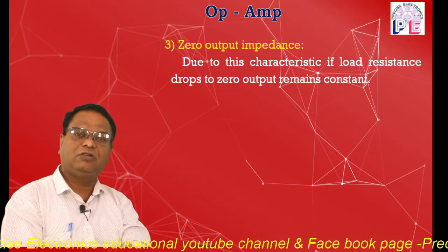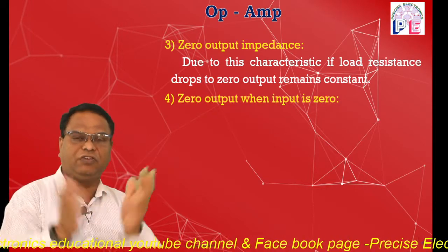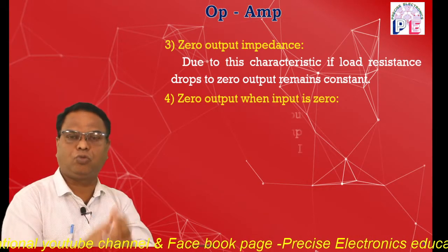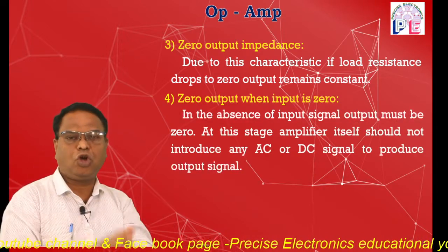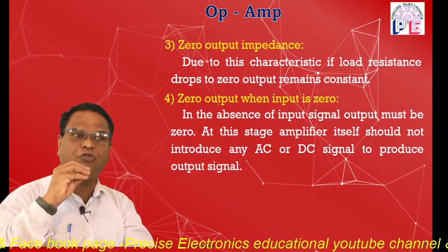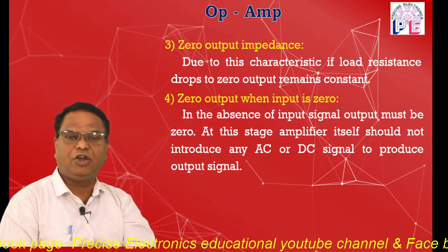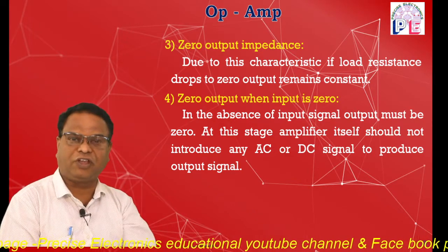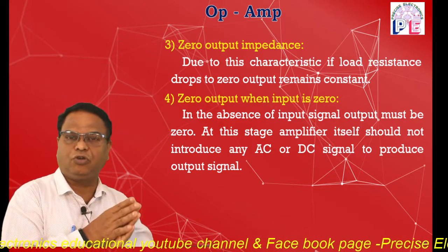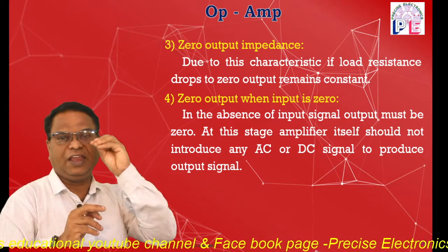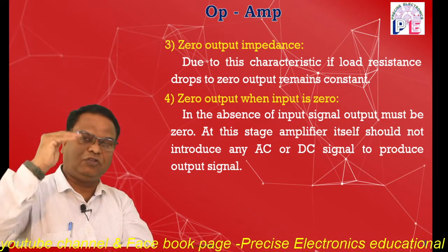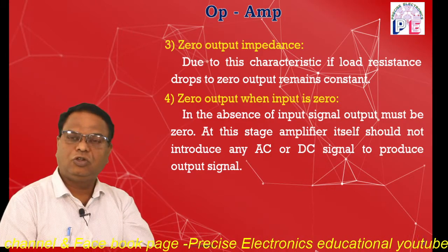The fourth characteristic is zero output when input is zero. If input is absent, there should be no output. A practical amplifier may introduce AC and DC signals, but in the ideal amplifier, if there is no input signal, the output signal must be zero. The amplifier should not introduce any AC or DC signal to produce output.